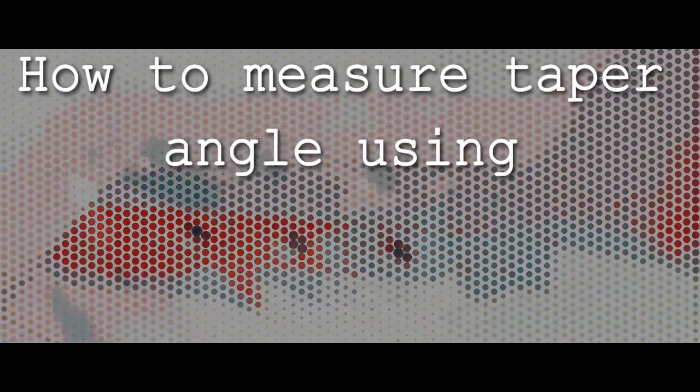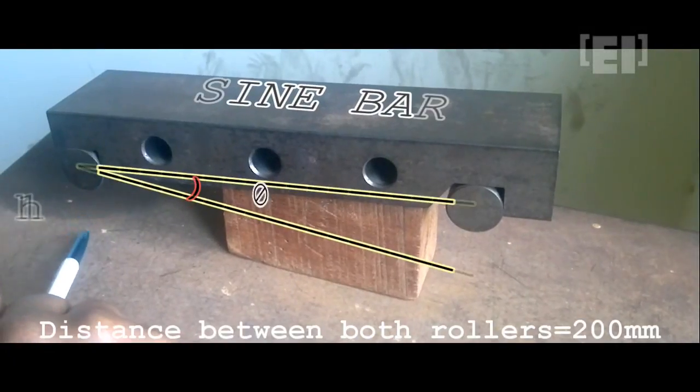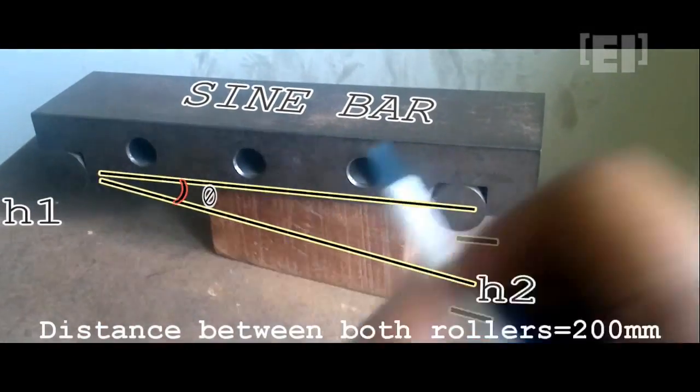In this tutorial we'll teach you how to measure taper angle using sine bar and slip gauges. The taper angle is denoted by theta. Here h1 and h2 denote the heights of the centers of the left and right rollers from the plane respectively.